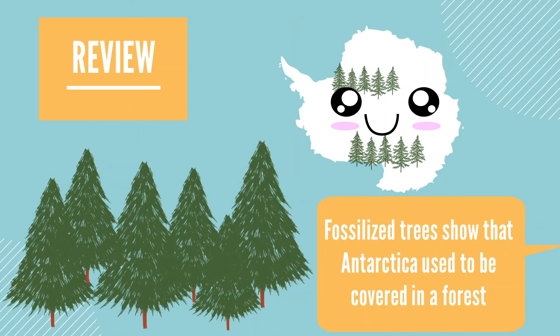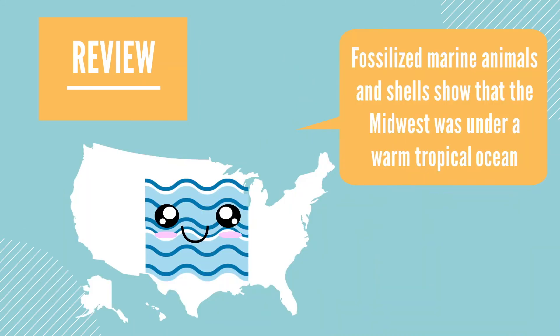We also learned that although Antarctica is the coldest place on Earth today, millions of years ago it was much warmer. We know it was warmer because scientists have found fossilized conifer trees that show Antarctica used to be covered by an expansive forest. Finally, we talked about what fossils in the Midwest can teach us about prehistoric environments in the U.S. Fossilized marine animals and shells show that the Midwest used to be under a warm tropical ocean millions of years ago.